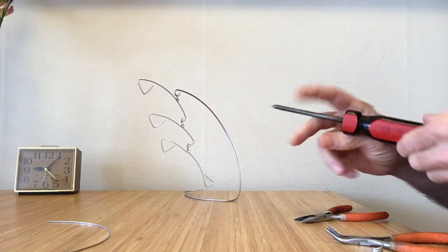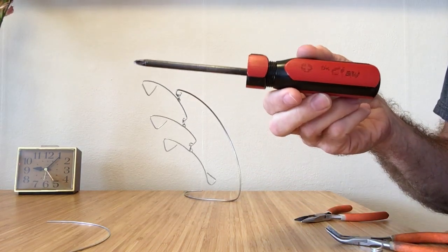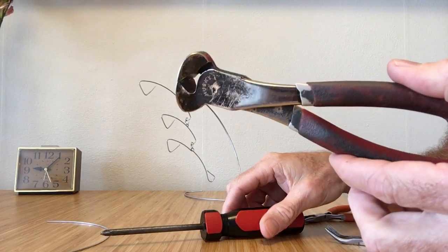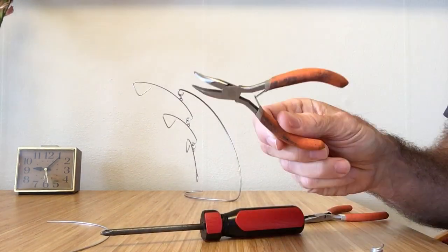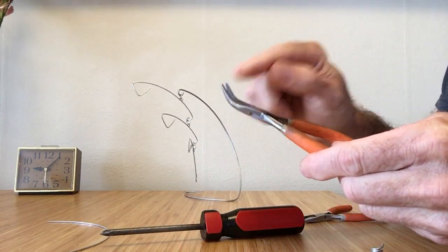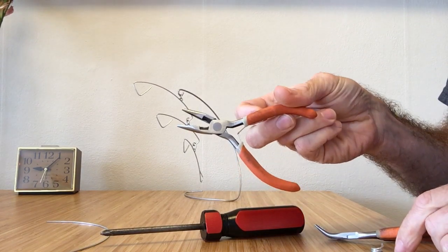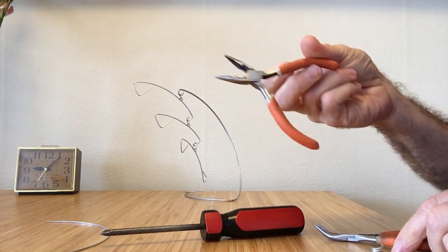So what you're going to need for this is a Phillips screwdriver, a pair of snippers, a pair of bent nose pliers, and a pair of long nose pliers. These are kind of small long nose pliers.